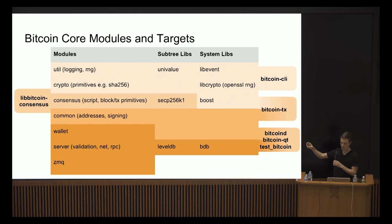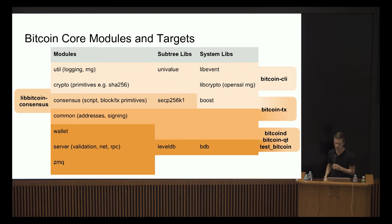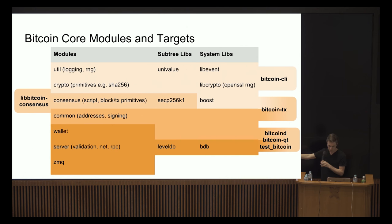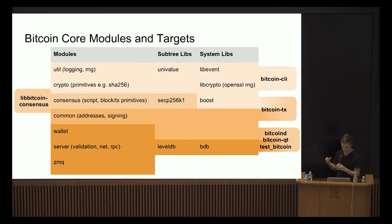We have some libraries included directly as subtrees mostly for convenience — for example, we include univalue because it isn't commonly distributed on major distributions. We also include the elliptic curve library and LevelDB because they are consensus-critical. Then we also have dependencies on general system libraries such as OpenSSL, which we use only for the random number generator, libwind, and Boost for advanced C++ language features.